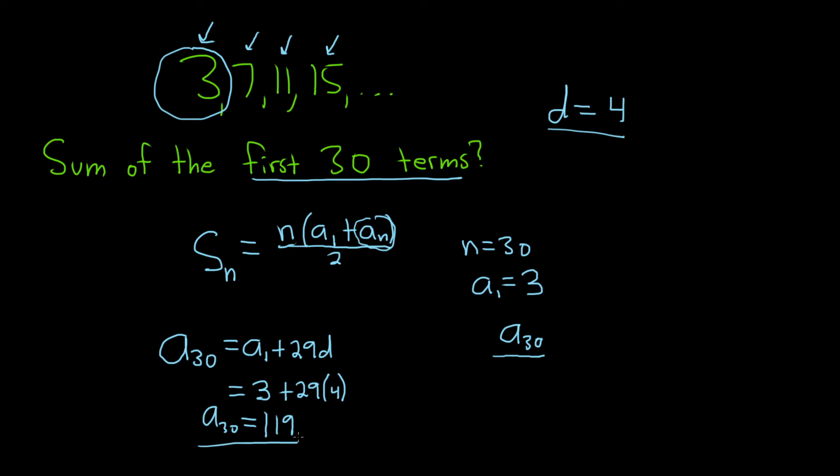So now that we have the 30th term, we can go back to our formula and plug everything in. So this is equal to, let's see, n we said was 30. Parentheses, a sub 1 was our first term,